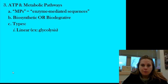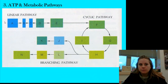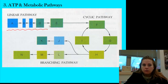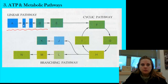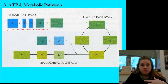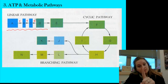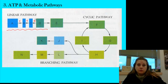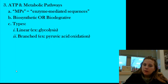The first type of metabolic pathway is a linear pathway. An example would be glycolysis, the first part of cell respiration. A linear pathway is literally as it sounds: we go from A to B to C to D to E. Each arrow represents a reaction, each reaction is enzyme mediated, and a different enzyme is necessary at each step.